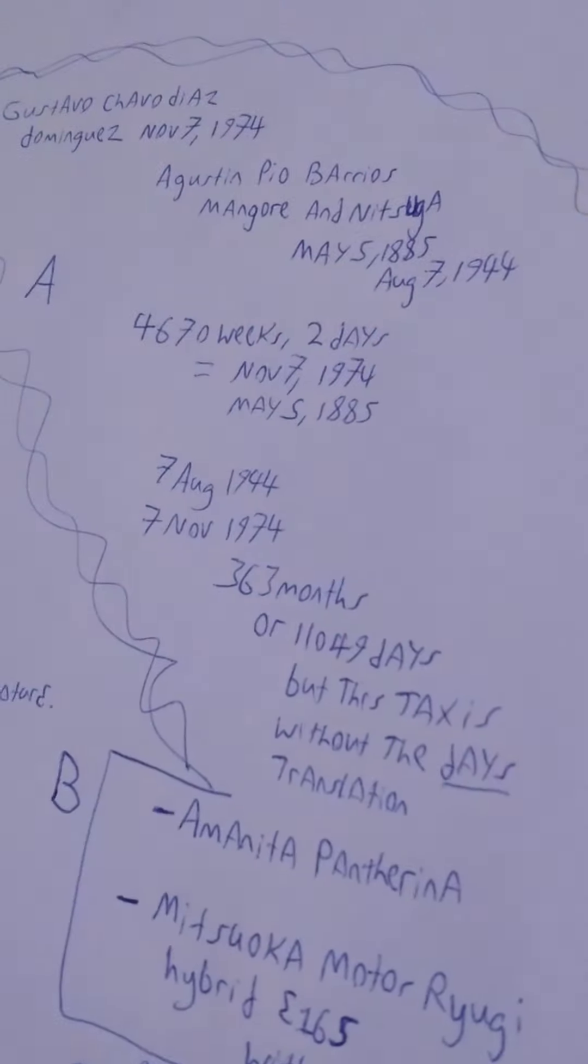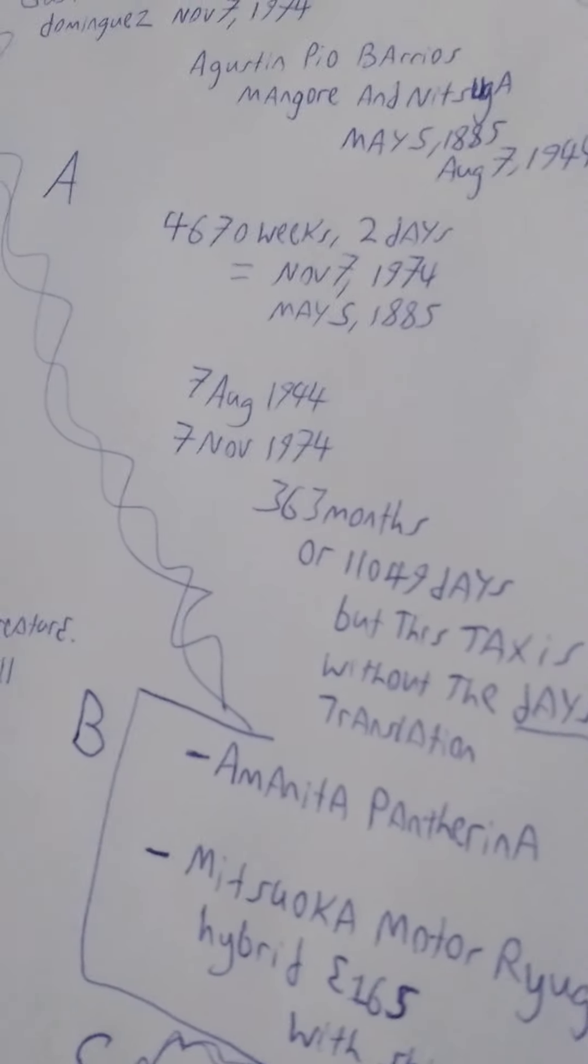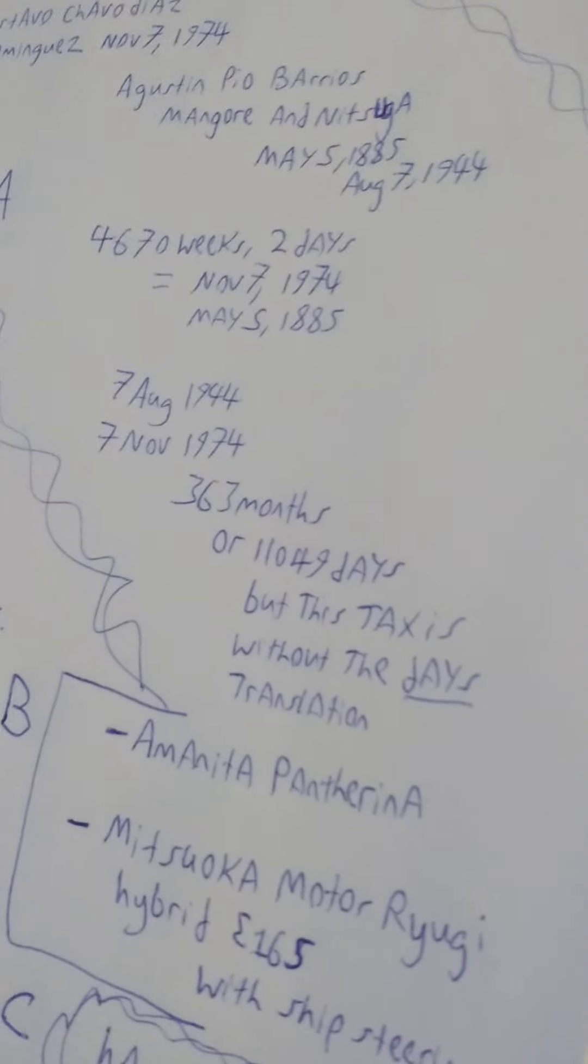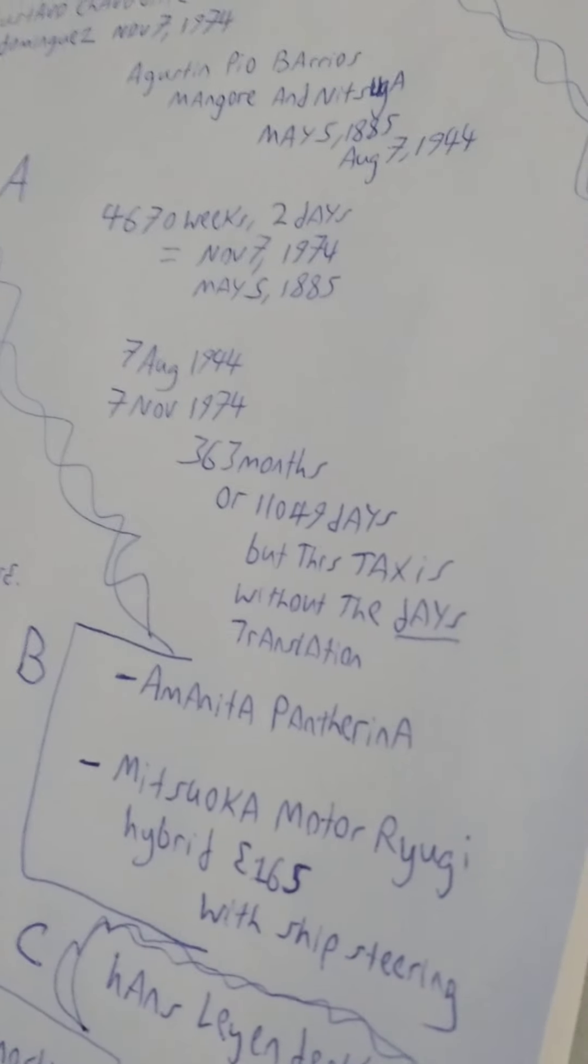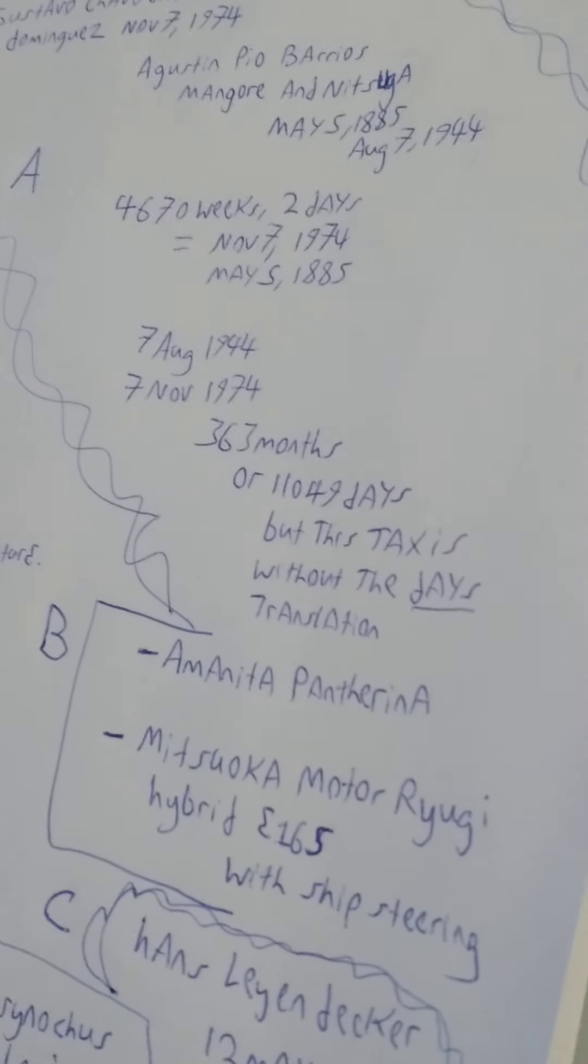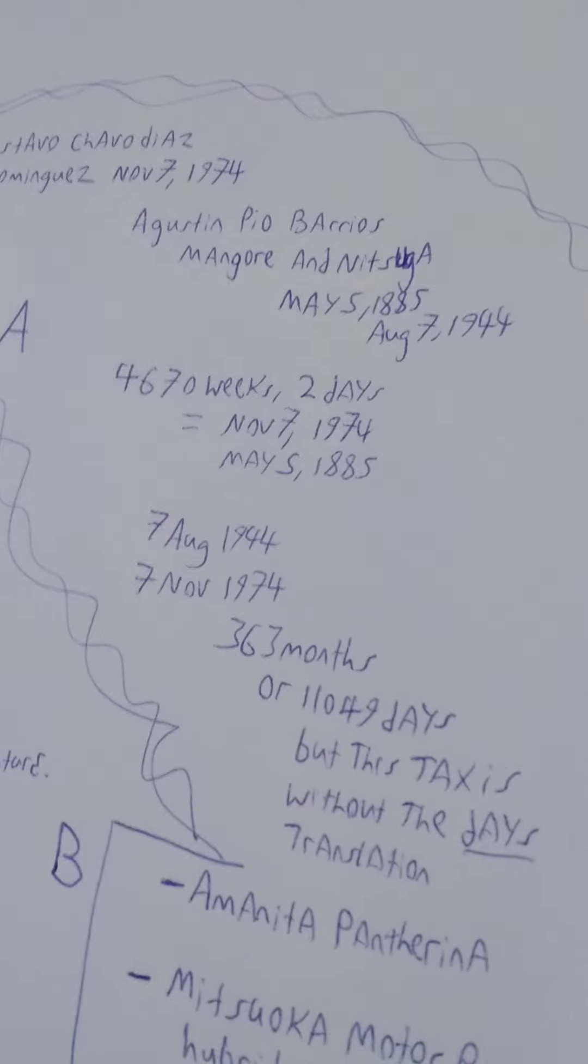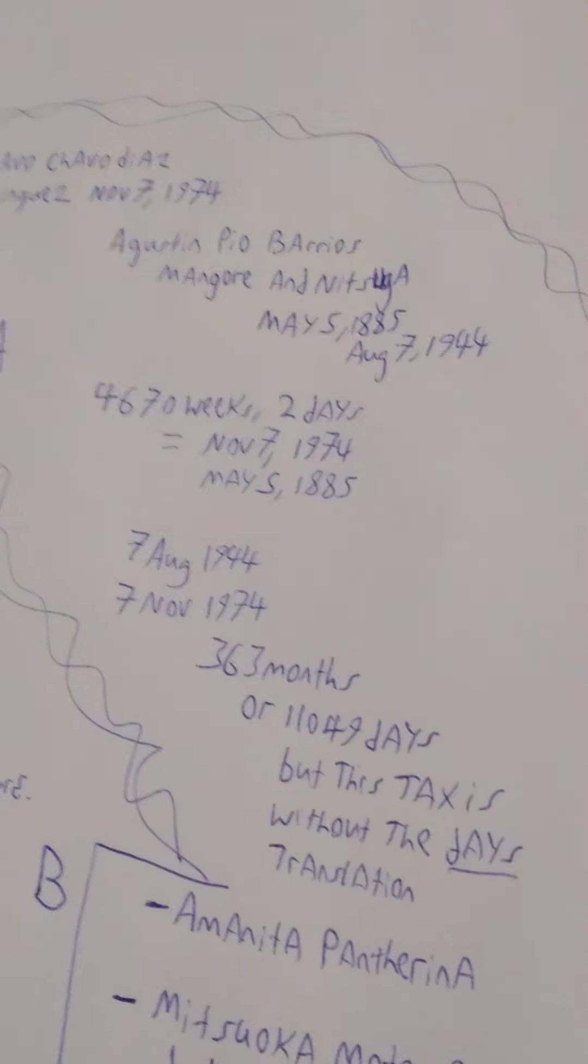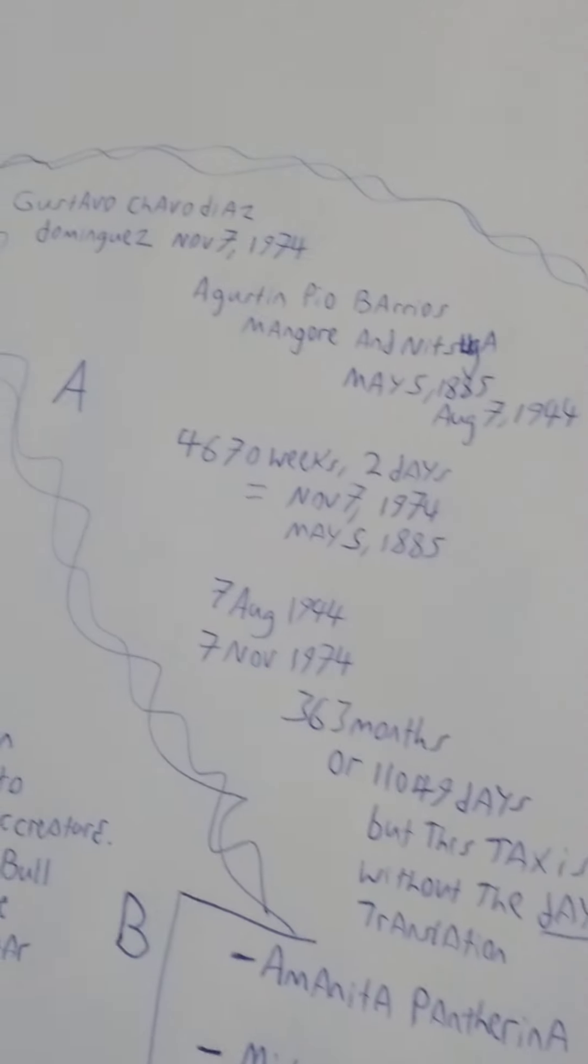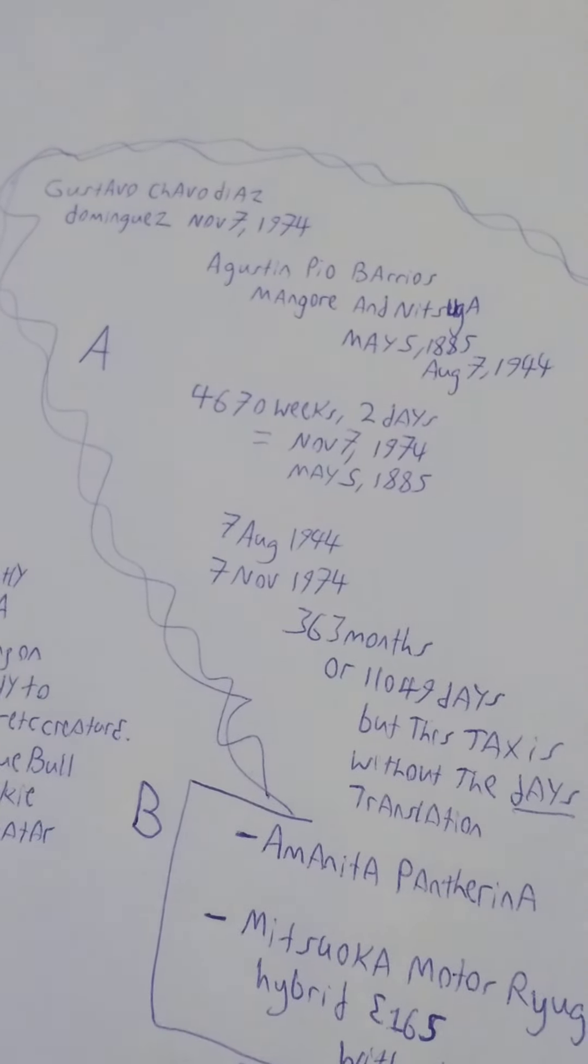That's kind of my interpretation of the taxes is kind of like that staff. Then August 7th, 1944 to November 7th, 1974 is 363 months or 11,049 days but this tax is without the days translation.